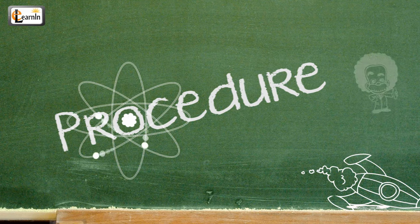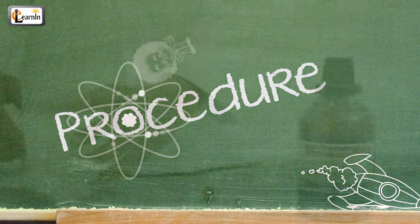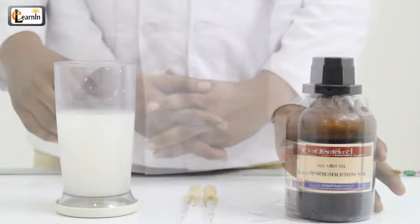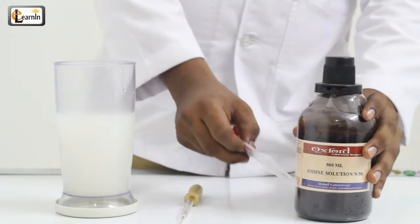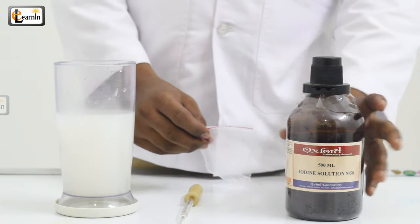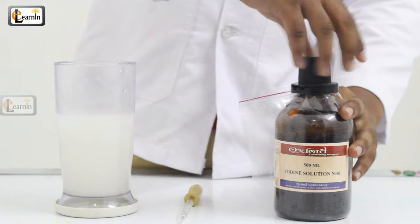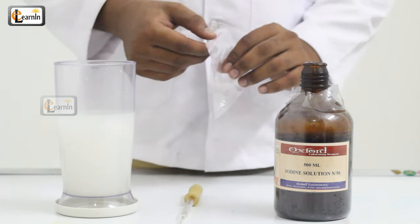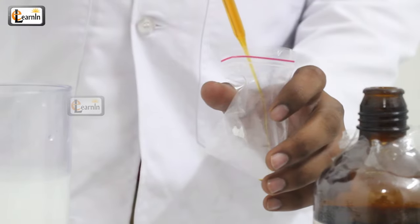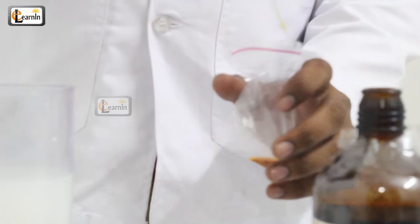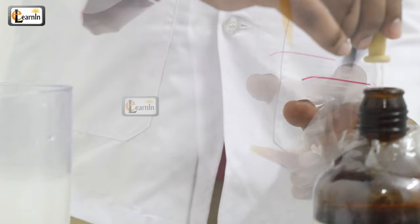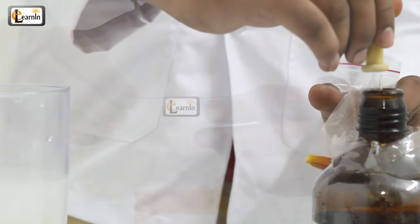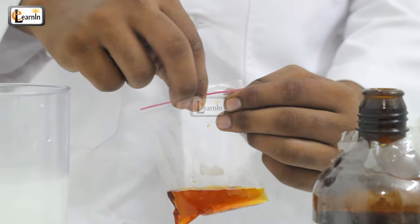Procedure: Mix the starch solution in the water in a beaker. With the help of the dropper put some iodine solution in the zipper bag. Zip up the plastic bag.